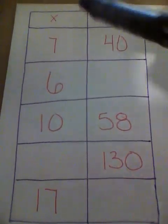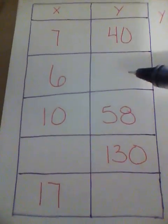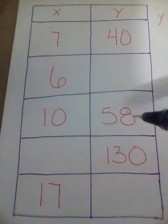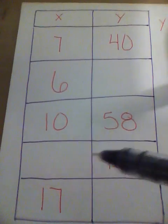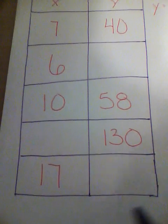So if I take a look at this function table, I see 7, 40, 6 we don't know, 10, 58, X we don't know, Y equals 130, and then here is your homework, this one right down here.